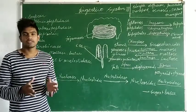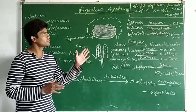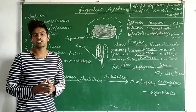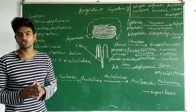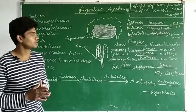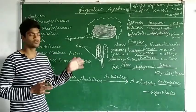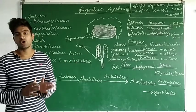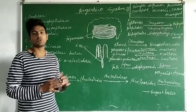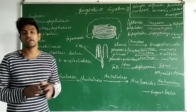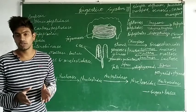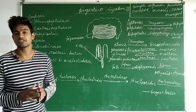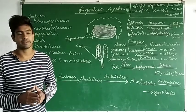Welcome to all of you in this third part of the digestive system. In our previous two videos we saw how the food reached the duodenum. Now we will see what happens when the food exits the duodenum and enters into the jejunum, which is the second part of the small intestine.